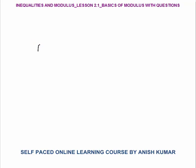When we say mod x, we know that its value is always positive. Mod x equals x when x is greater than or equal to 0, and its value is minus x when x is less than 0. Why minus x? Because when x is negative, negative into negative will become positive, so overall the value of mod will remain always positive.